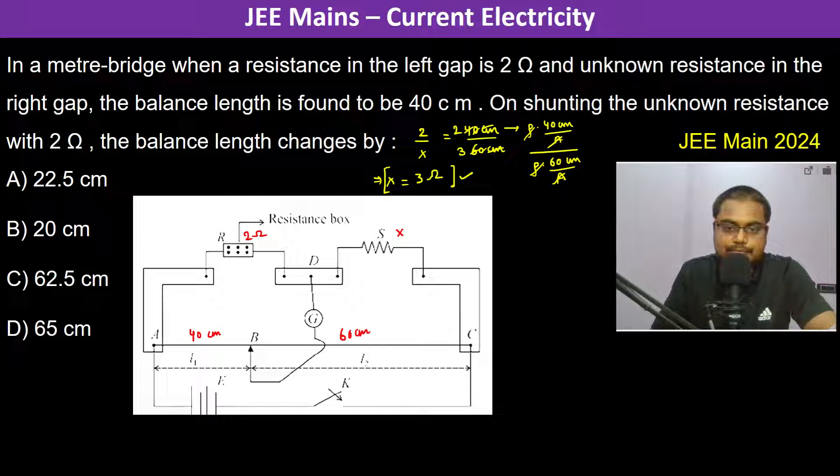Now x is 3 ohms. Okay, now what happens is on shunting the unknown resistance with 2 ohm, so now what we have done is we have shunted here with 2 ohms. So therefore here the resistance becomes 2 into 3 divided by 2 plus 3, which is 1.2 ohms. Basically, 1 by r equivalent is equal to 1 by 3 plus 1 by 2, and therefore r equivalent is 1.2 ohm.